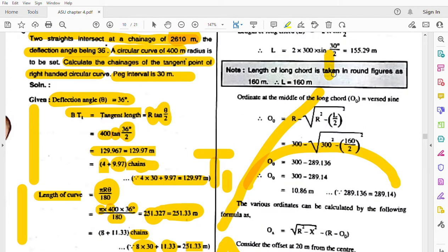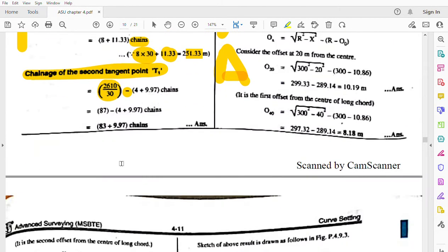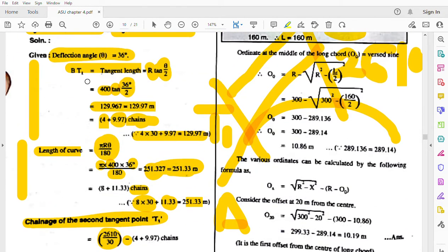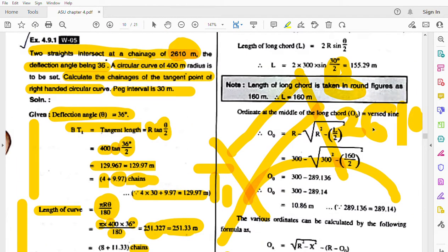And here is point B. So on point B we have the chainage given: 2, 6, 1, 0. And here is the distance between T1 - this distance, length BT1, we have calculated. BT1 we have calculated as 4 plus 9.97 chains.